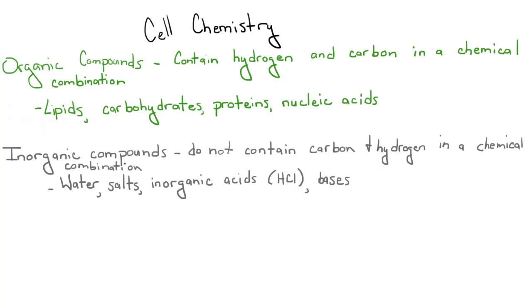Anyways, cells are basically just tiny little chemical factories. They're constantly working to break down, build, or modify compounds. Cells contain both organic compounds, which contain hydrogen and carbon in a chemical combination, and also inorganic compounds, which do not contain carbon and hydrogen in a chemical compound.